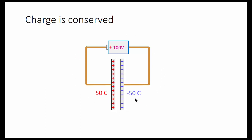leaving a deficit of 50 coulombs. Negative 50 coulombs on this side and positive 50 coulombs on this side. The net charge on this capacitor is still zero, the sum of 50 and minus 50.